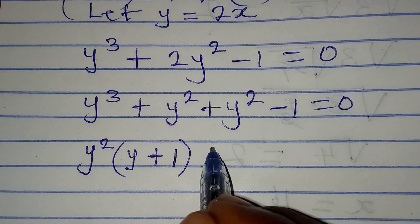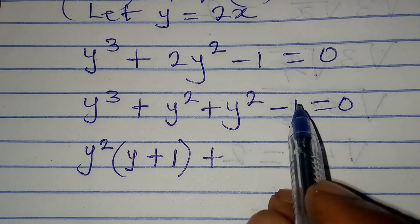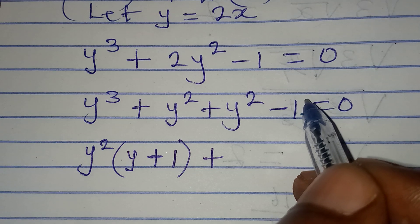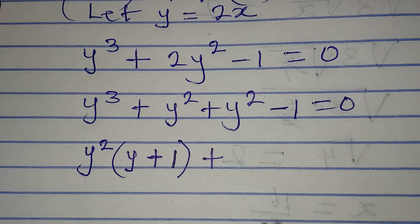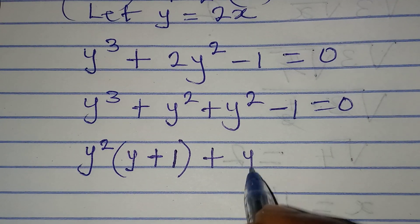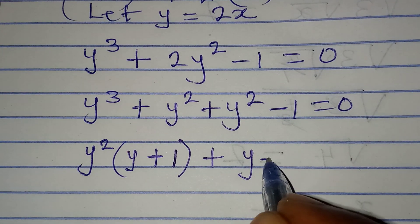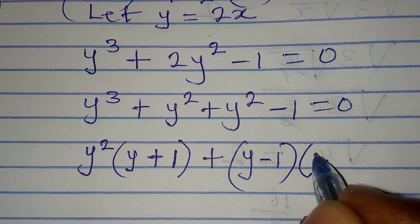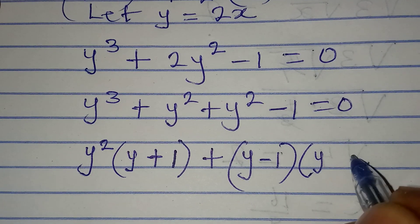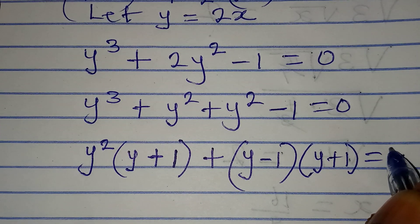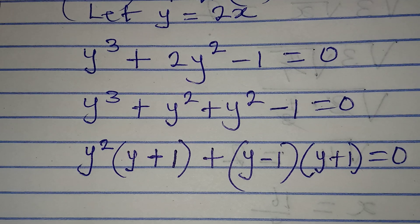On this side, remember this can be 1 to the power of 2, so I can apply difference of two squares, which will give me y minus 1, and in the other bracket y plus 1. This will be equal to 0.